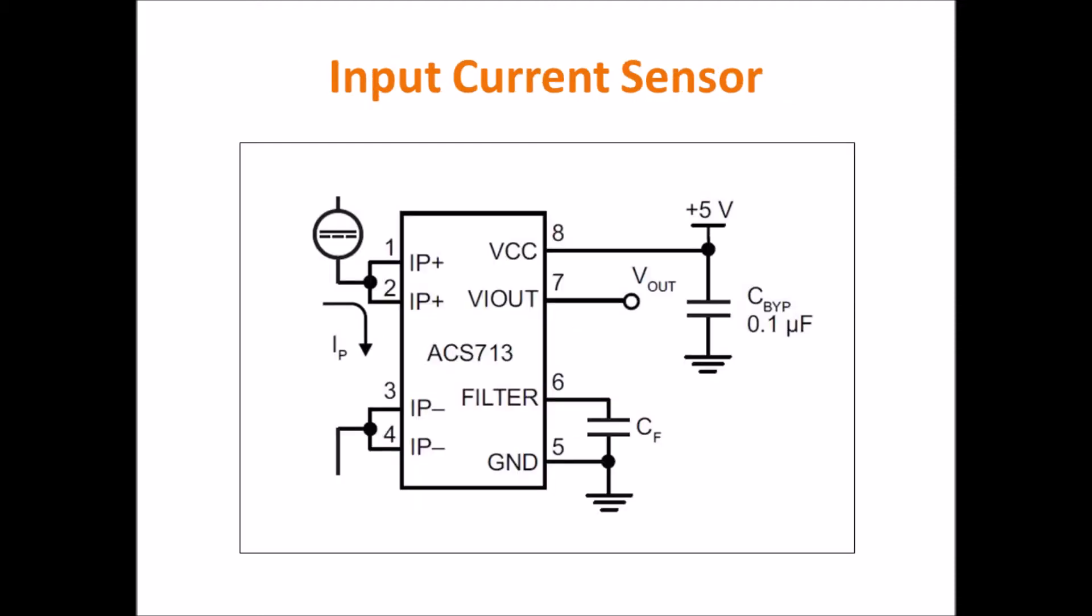The next sensor is the input current sensor. For the input current sensor, the Allegro ACS713 integrated circuit was chosen. The ACS713 operates by utilizing a Hall effect circuit. The Hall effect circuit detects the voltage potential from the magnetic field created by the input current. That voltage potential is processed and delivered as an output voltage proportional to the input current. The low internal resistance, linear output sensor scale, and small footprint allowed for more efficient and reliable design.